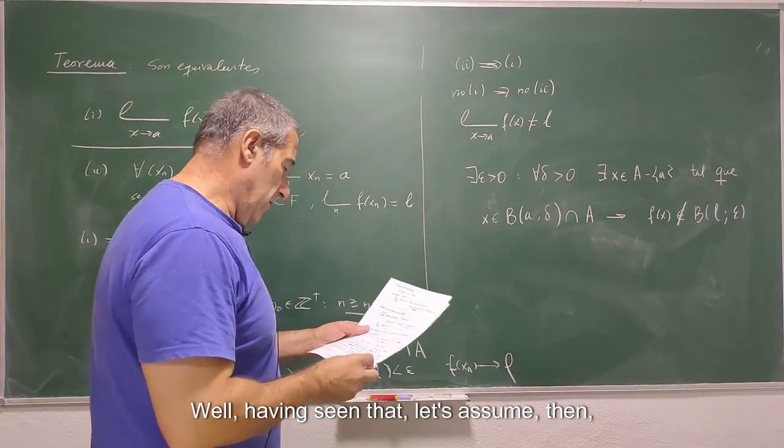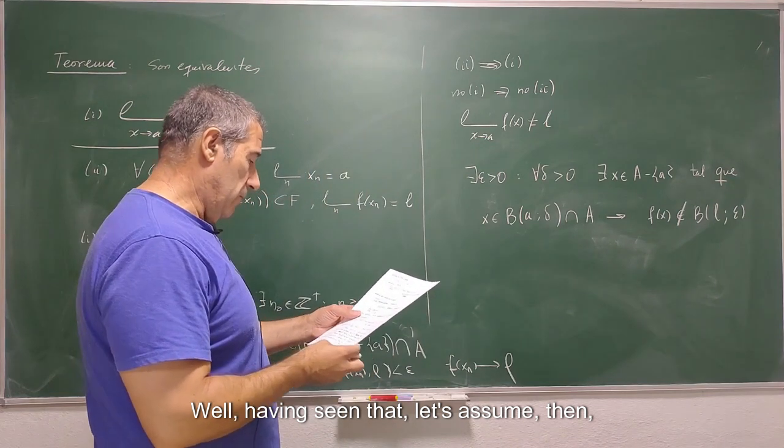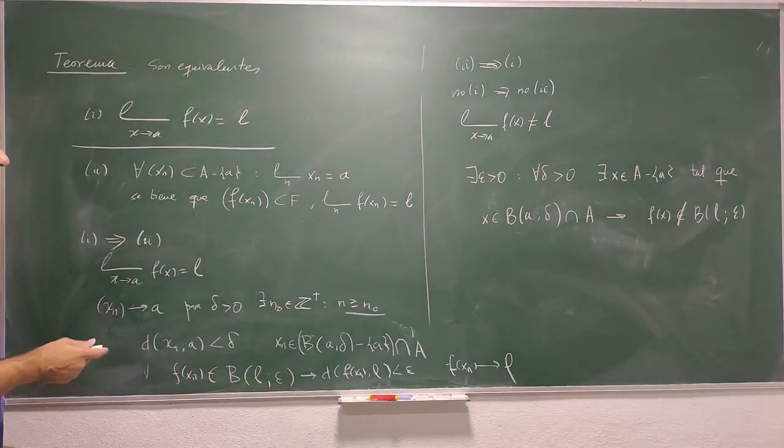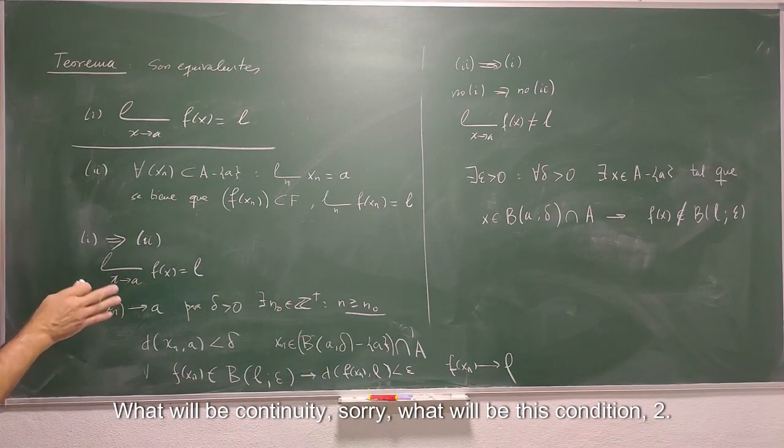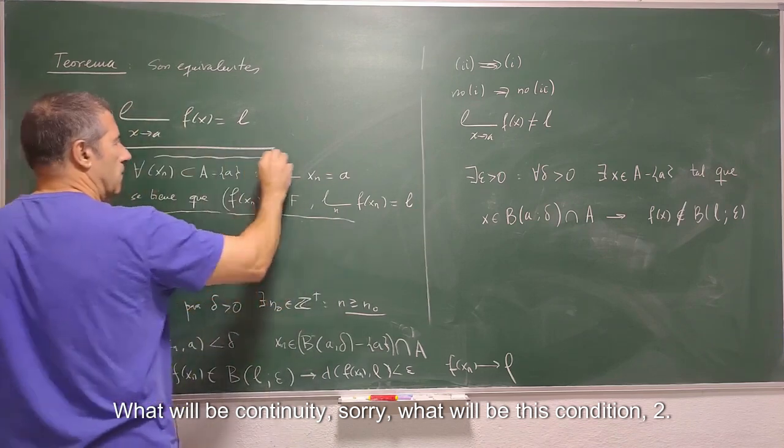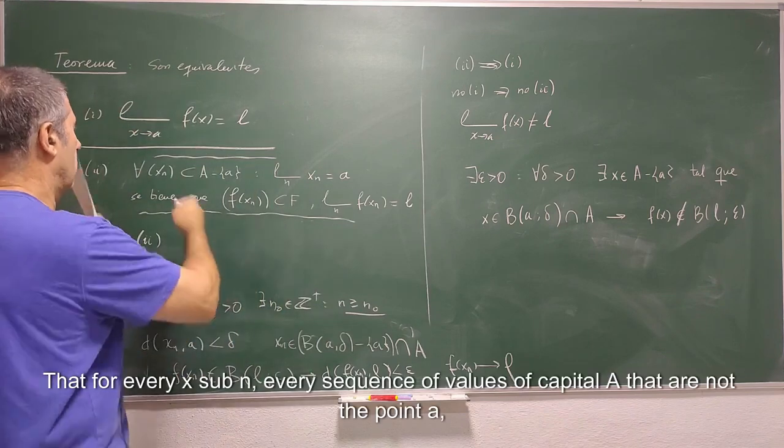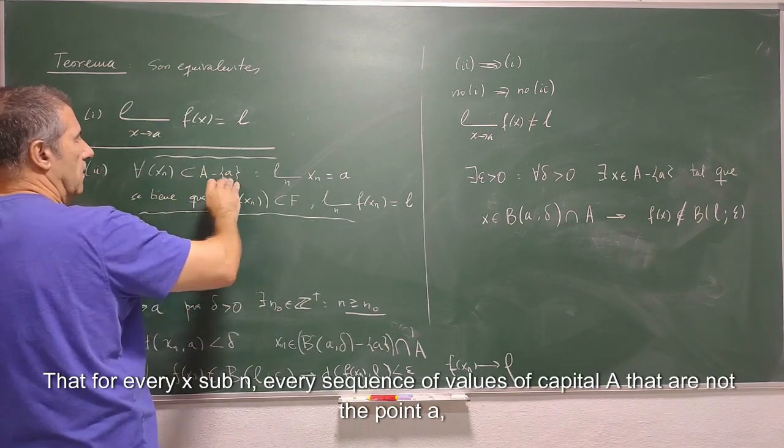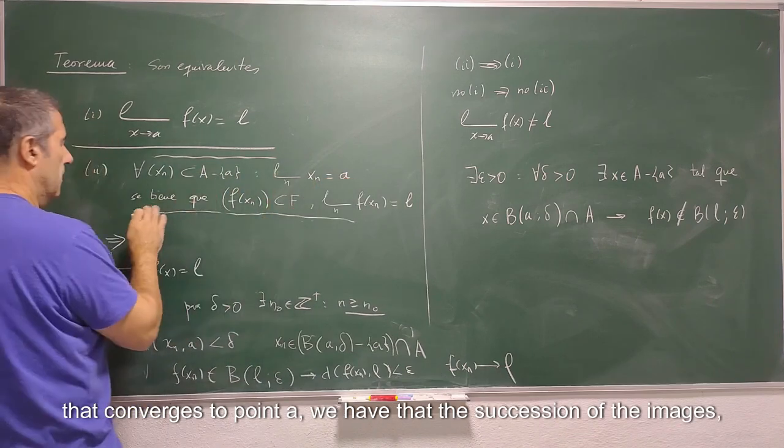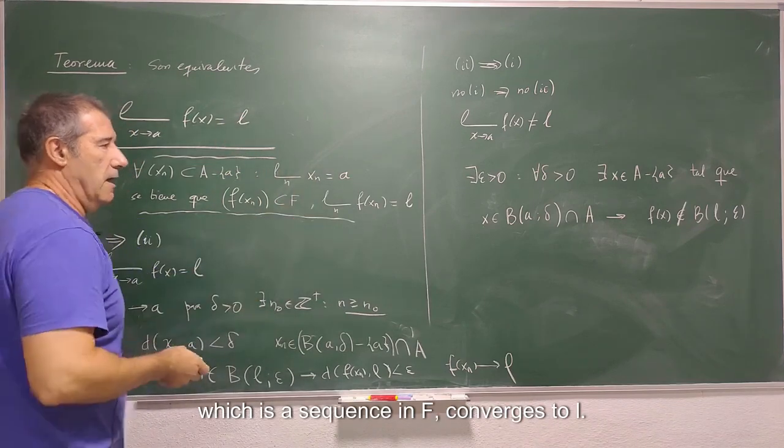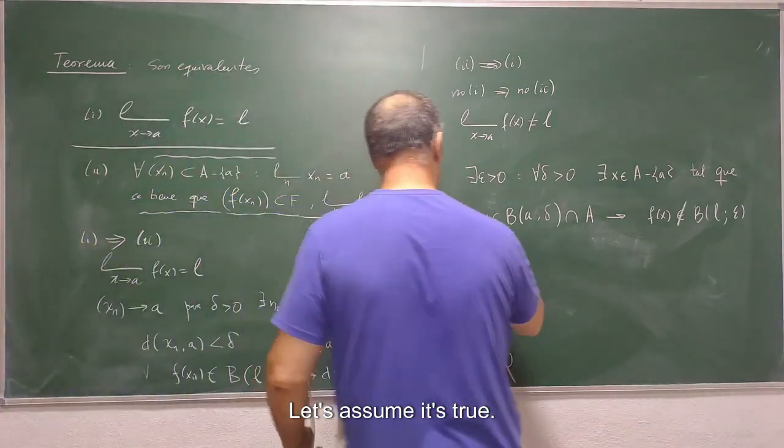I repeat, there will be a way that any of what you say here in the balls centered on point a will allow defining a point whose image will be left out. That is the central idea of denial. Well, having seen that, let's assume, then, what will be this condition, that for every x sub n, every sequence of values of capital A that are not the point a that converges to point a, we have that the succession of the images, which is a sequence in F, converges to L. Let's assume it's true.